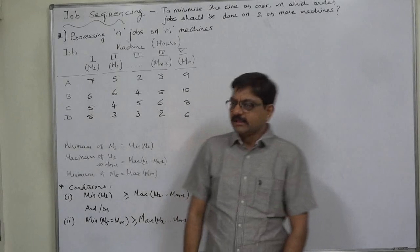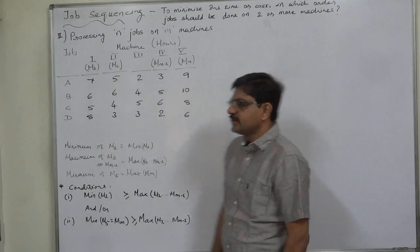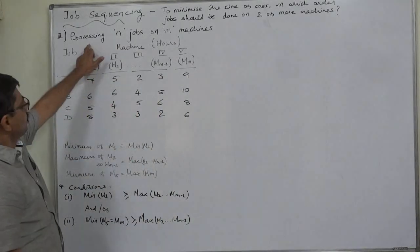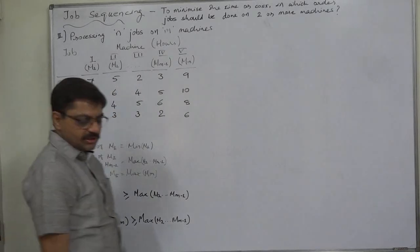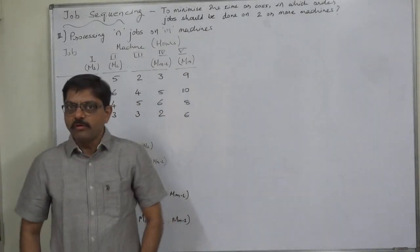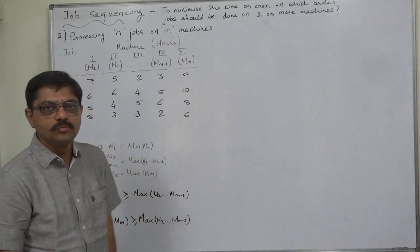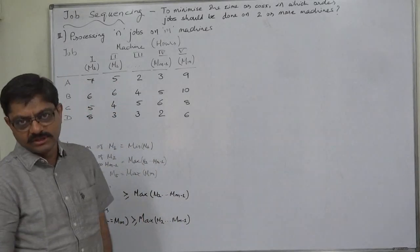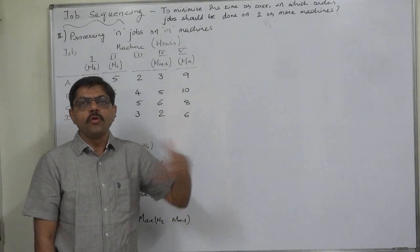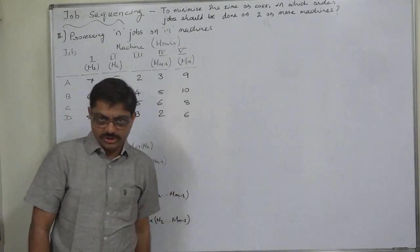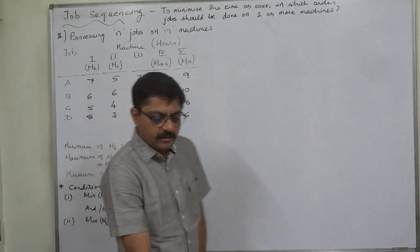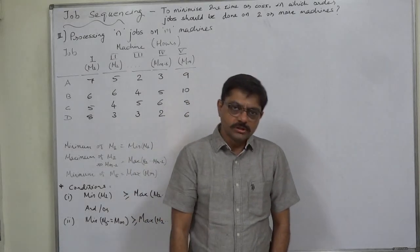Hello and welcome. The chapter is job sequencing, and now we are dealing with processing jobs on M machines. In this case, M means more than three, because we have already discussed the cases with two machines and three machines separately. Now, what if there are four or more machines? We solve the problems through Johnson's rule.